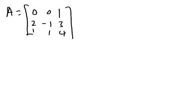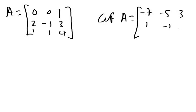So if A is a matrix and it consists of elements 0, 0, 1, 2, -1, 3, 1, 1, 4, and its cofactor turns out to be a matrix with the following elements: -7, -5, 3, 1, -1, 0, 1, 2, and 0.